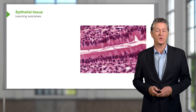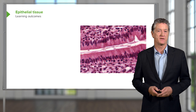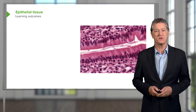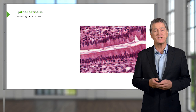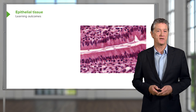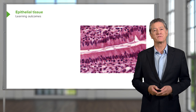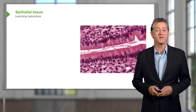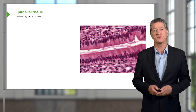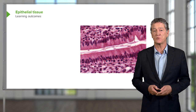Epithelium is very important to understand because it's located in most organs of the body. And if you can identify the different sorts of epithelium and you know the different functions of each of these epitheliums, then it's very easy for you to understand the structure of organs and to identify different organs.